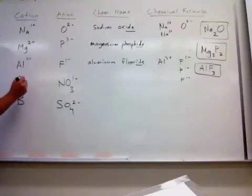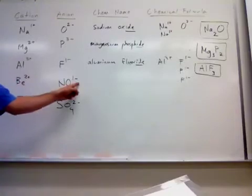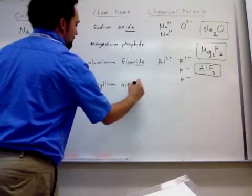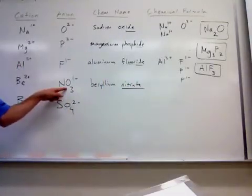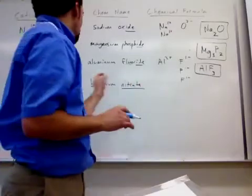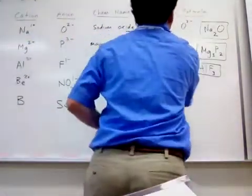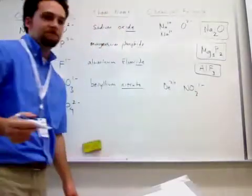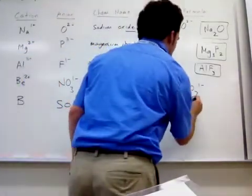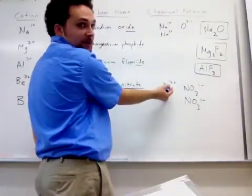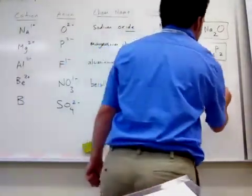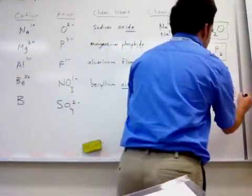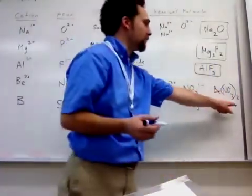Beryllium has a positive two charge — it loses two electrons. So we have a positive two and a negative one charge. The name is beryllium nitrate — you just take the name of the polyatomic ion, which is nitrate. You don't add -ide this time. Now we balance: Be²⁺ and NO₃¹⁻. I need more NO₃⁻ — now I have negative two to cancel the positive two. The formula is Be(NO₃)₂ — it goes in parentheses because it's polyatomic, and I have two of them.